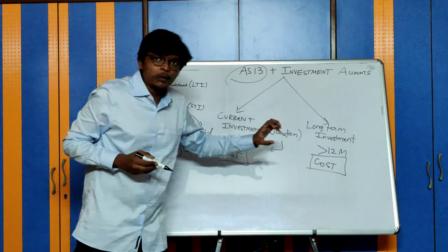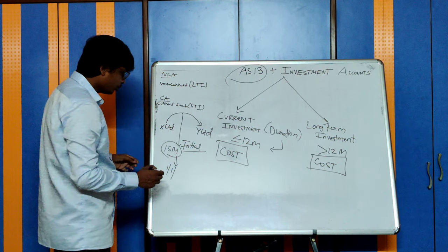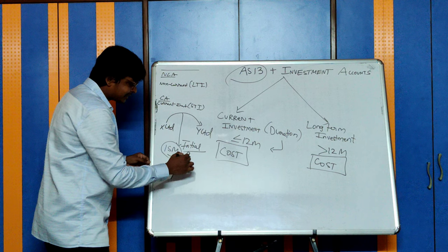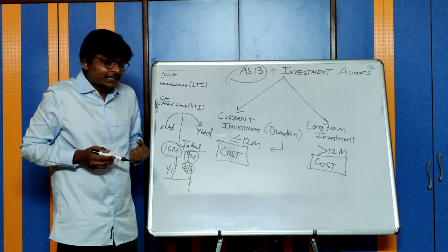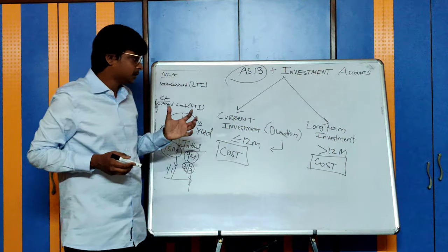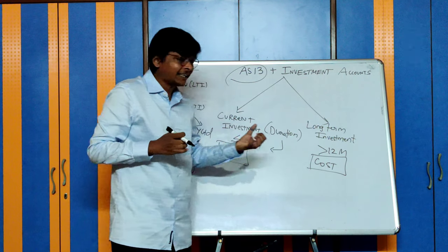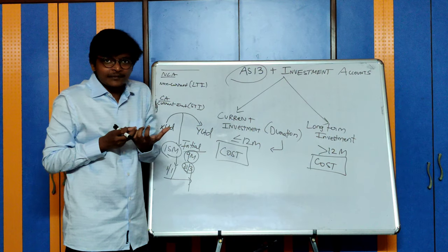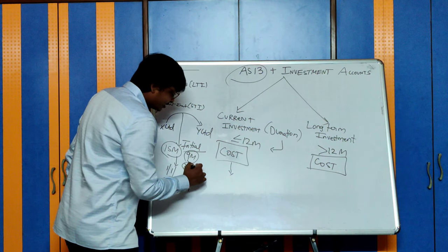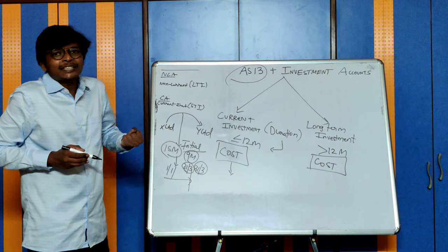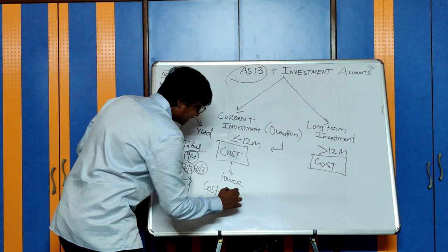Assume an investment goes through a balance sheet period. Say investment is made on 1st January, with the intention to hold for 9 months. After 3 months, there comes a balance sheet date. At the balance sheet date, you check the value of these investments. For long-term investments, the intention is to hold for a long period, so temporary fluctuations should not affect you much. However, for current investments, any temporary fluctuation should affect you. Therefore, at the balance sheet date on 31st March, you revalue these investments at the lower of cost or realizable value.